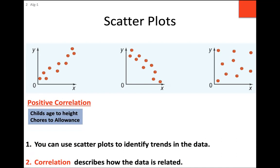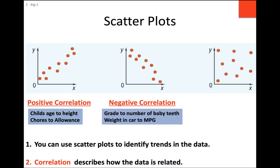For the middle pattern: if we draw a line through the data it would trend downward, so the slope would be negative — we say this has negative correlation. That doesn't mean no correlation; it means as the x value increases, the y values are decreasing. Examples: as your grade level increases, the number of baby teeth you have decreases. Or as the weight of your car increases, your miles per gallon decreases.